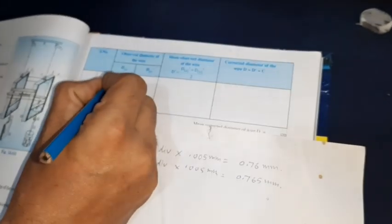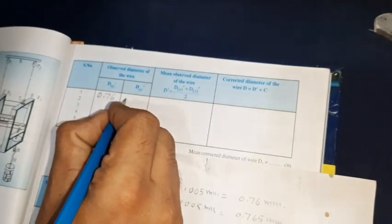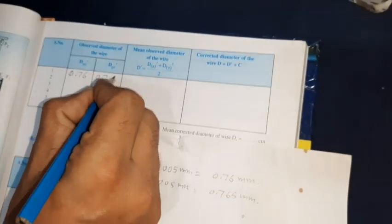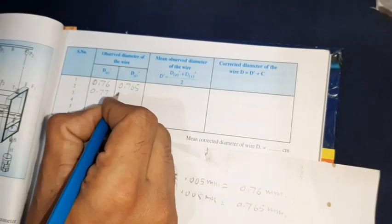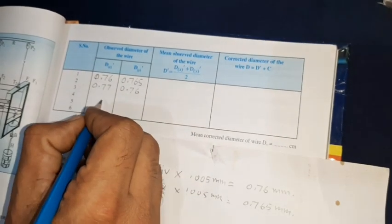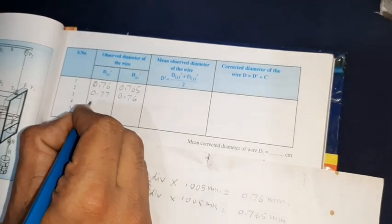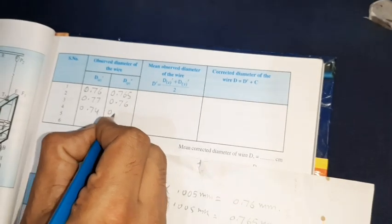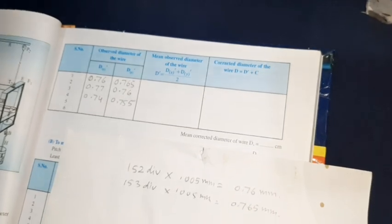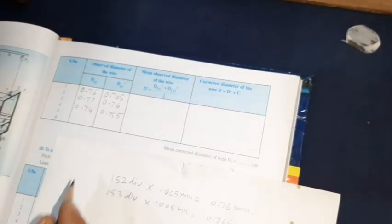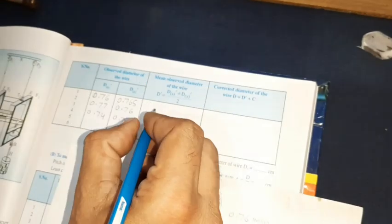So now we will fill in 0.76, 0.765. Now second reading is 0.77, 0.76, and 0.74, and 0.755. In this way, we can take more readings. So now we will check the mean of these readings.